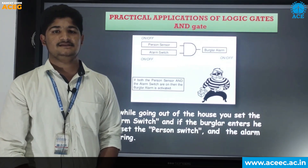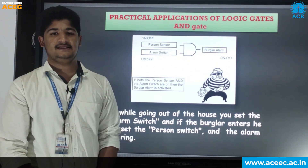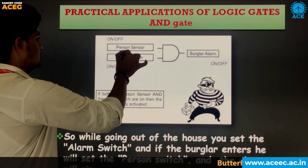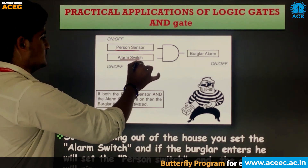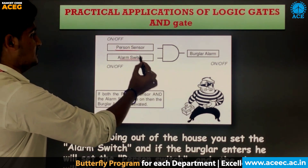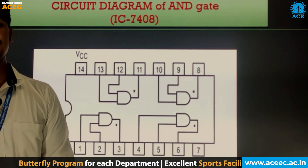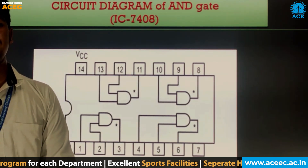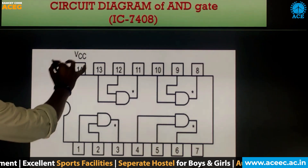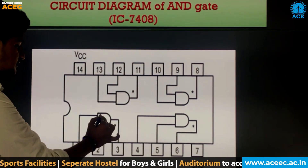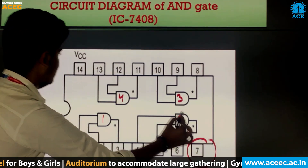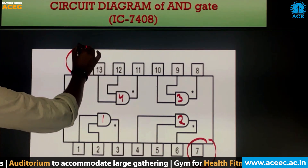Now let us see the practical application of the logic AND gate. In this AND gate, the inputs are a personal sensor and an alarm switch. If both inputs are high, then the alarm will ring. This is the circuit diagram for the AND gate. The IC value is 7408. In this circuit diagram, there are 14 pins and 4 AND gates. Pin 7 represents ground and pin 14 represents power supply.